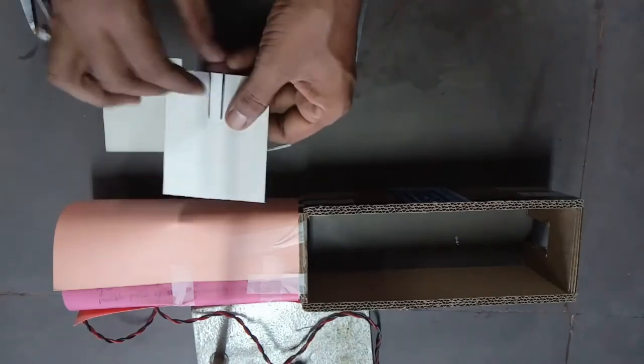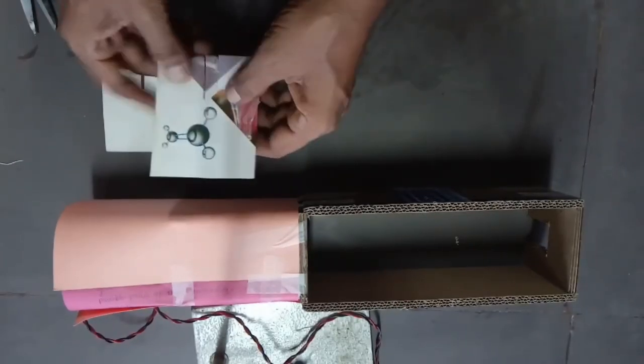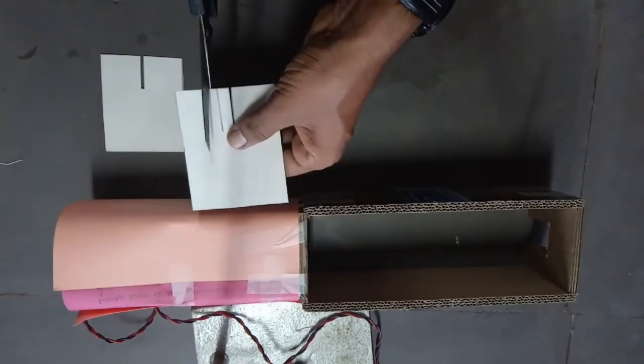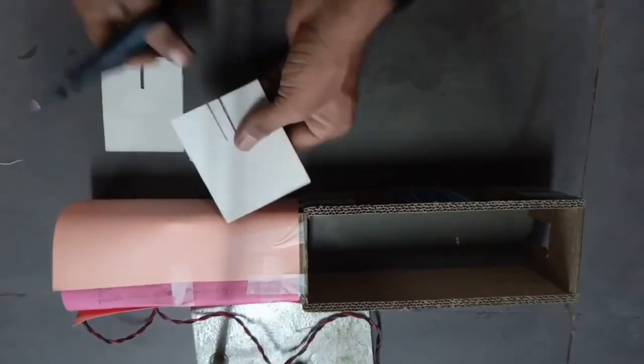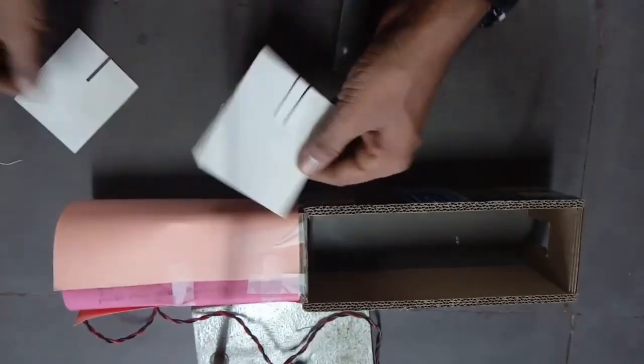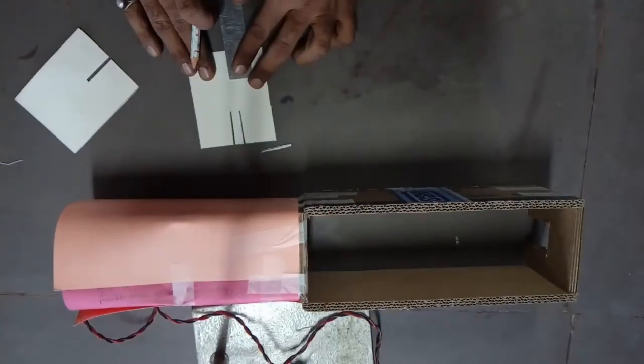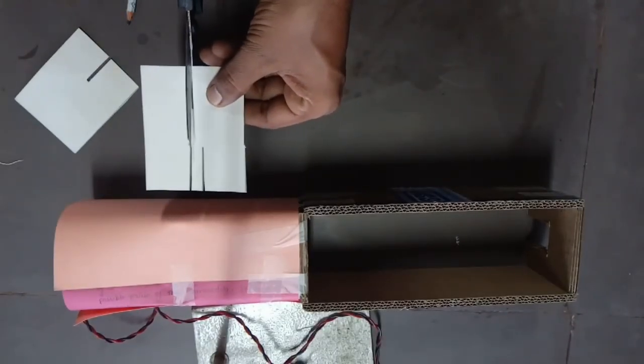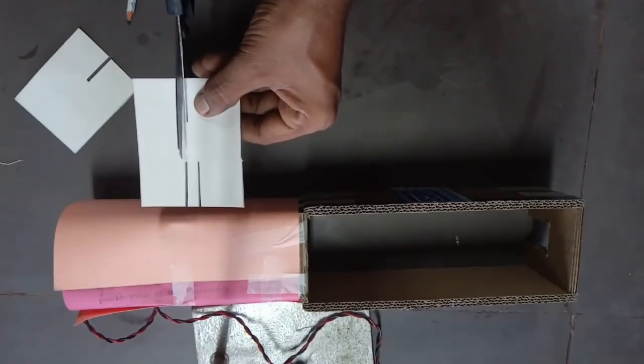Two narrow slits will produce two parallel rays. And from the opposite side, cut a single narrow slit to form a single ray of light.